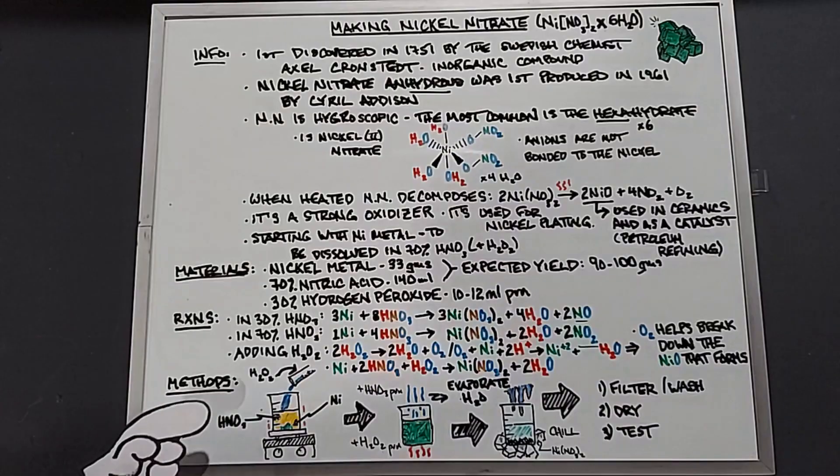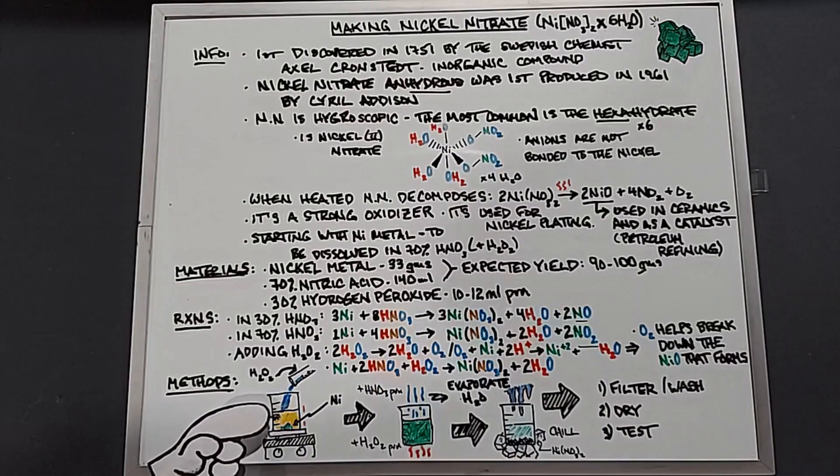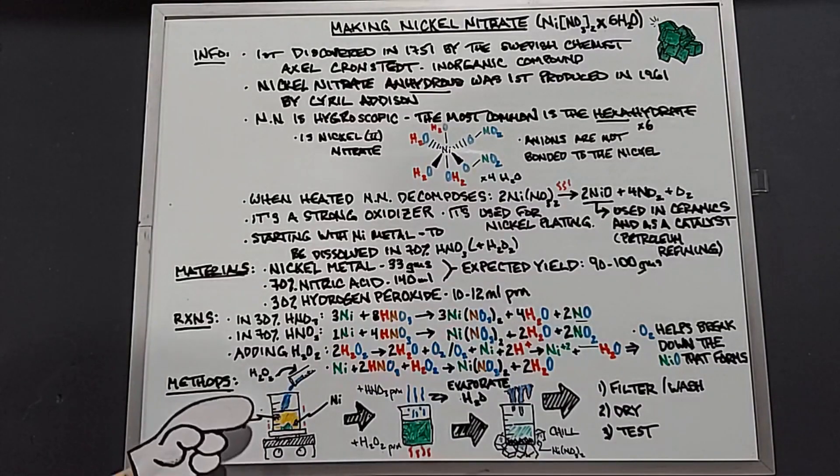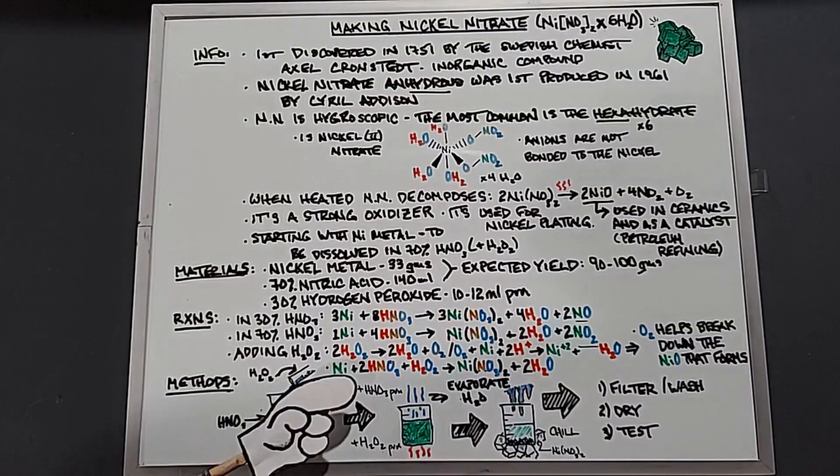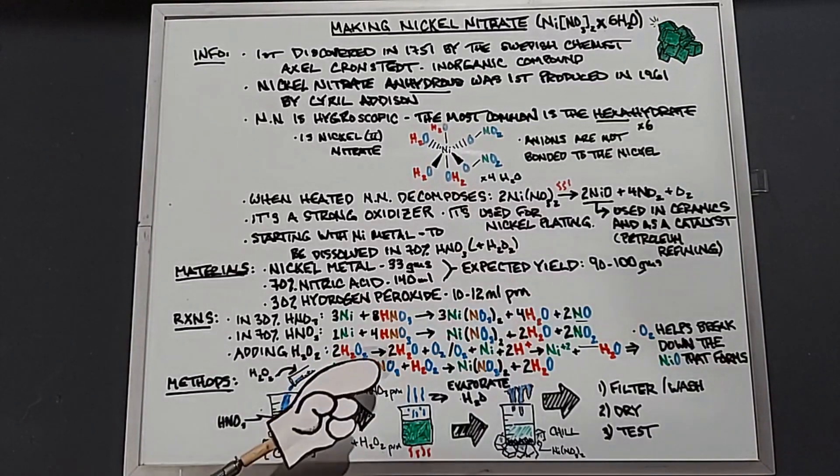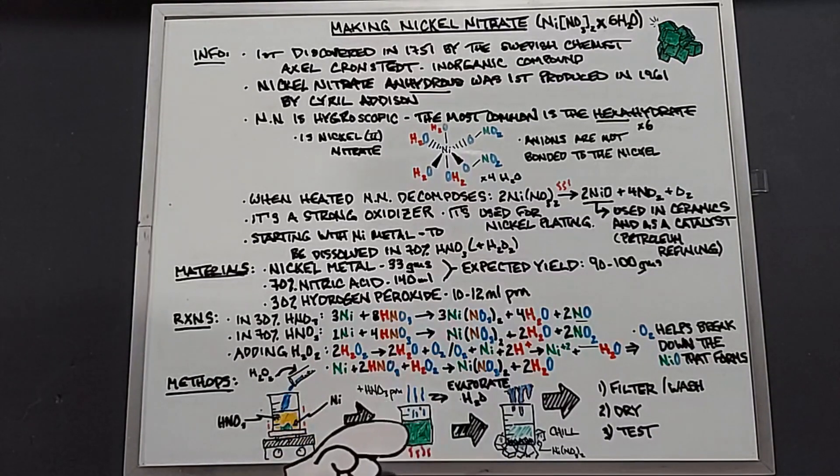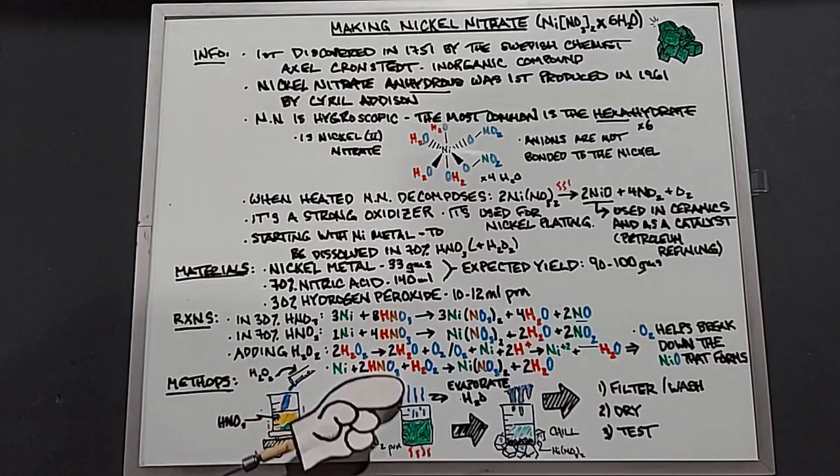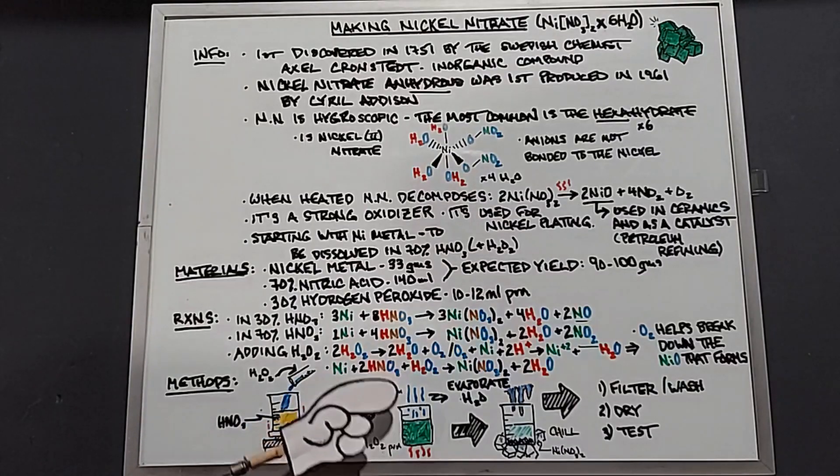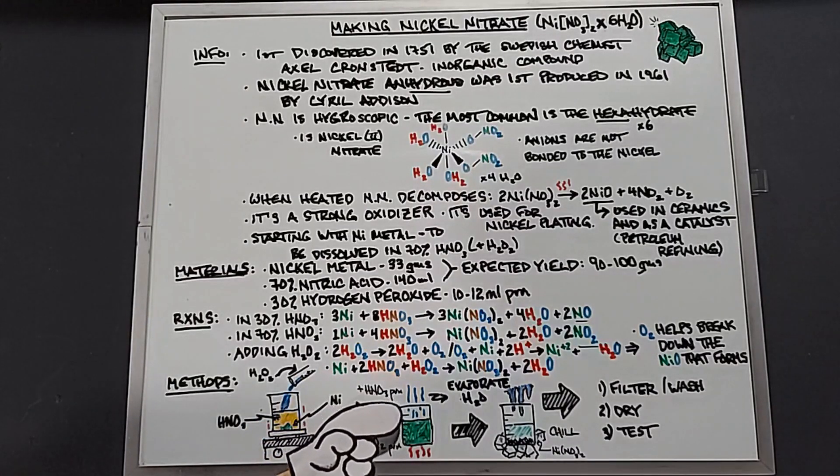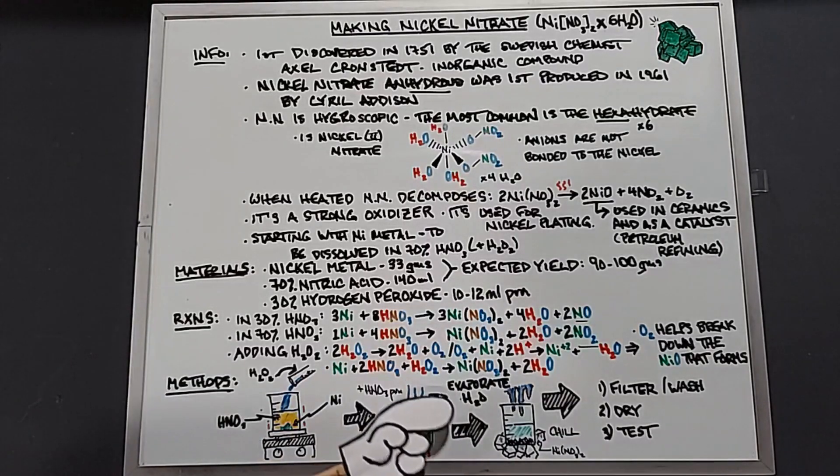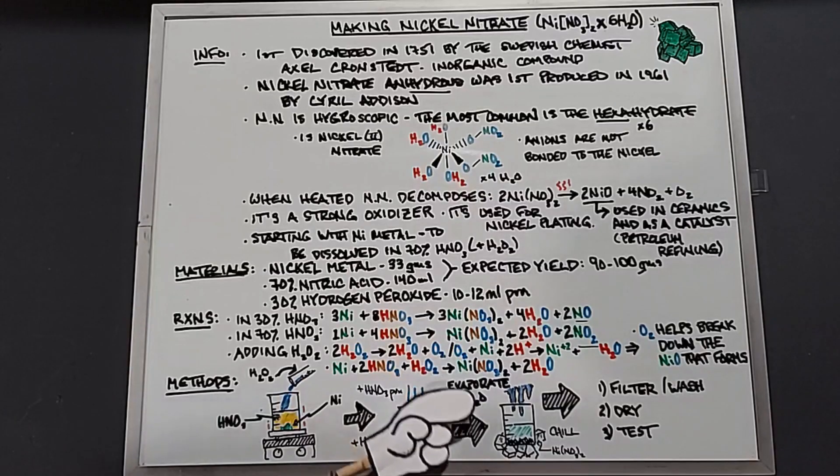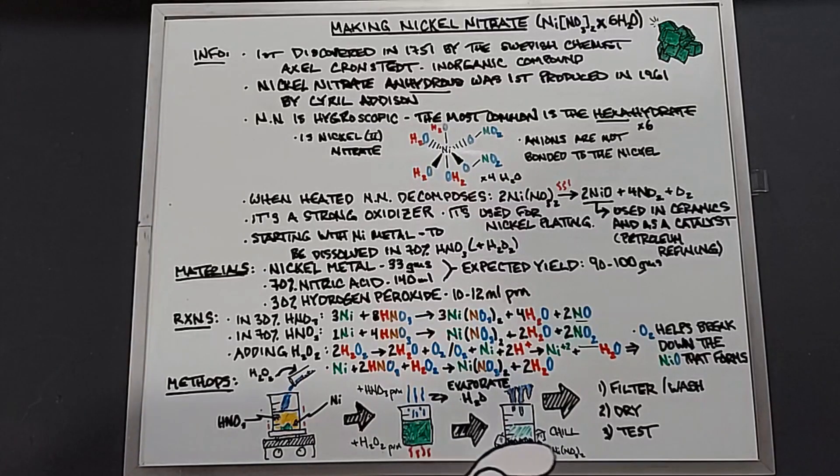In our methods, we're going to start with a beaker with 70% nitric acid and nickel metal. Adding hydrogen peroxide will be done as needed to get the nickel dissolved. Once that's done, I'm going to heat it to get rid of some of the water because we're using 30% hydrogen peroxide, which is 70% water, and 70% nitric acid, which is 30% water, plus we're producing water in the actual reaction itself. Once as much water is going to evaporate as necessary, we're going to cool it, which will bring out the nickel nitrate hexahydrate into its crystallized form.